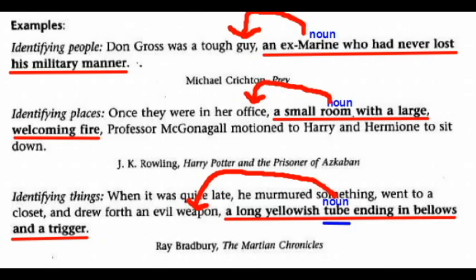Let's look at some examples, and mark your examples like I've done on the screen. Identifying people: 'Don Gross was a tough guy, an ex-marine who had never lost his military manner.' I've underlined the appositive phrase 'an ex-marine who had never lost his military manner.' The noun in that phrase is ex-marine, and it's renaming 'guy,' so I've drawn an arrow.